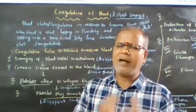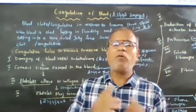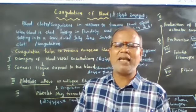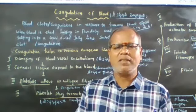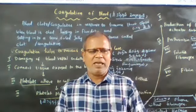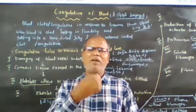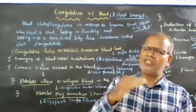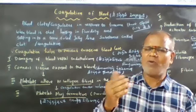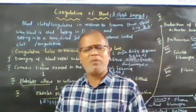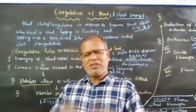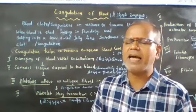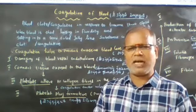When blood is shed, it loses its flow and sets into a semi-solid jelly-like substance called a clot. Coagulation helps to prevent excessive blood loss at the time of injury.